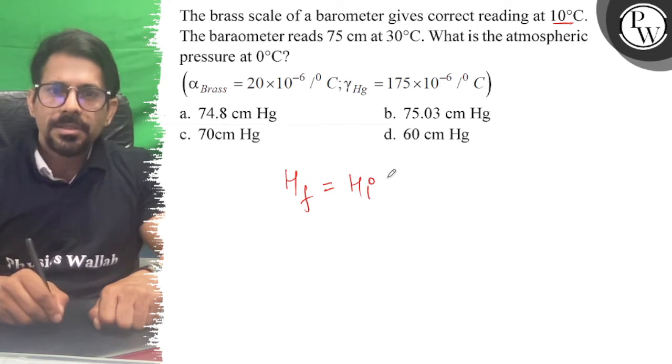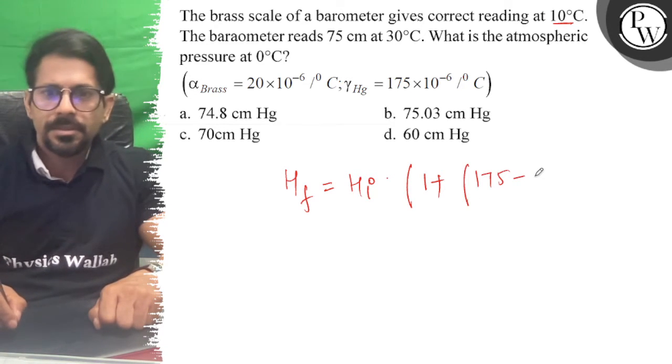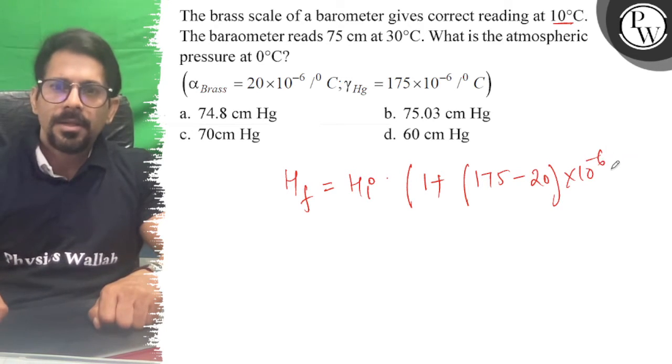H initial times [1 plus (175 minus 20) times 10 to the power minus 6 times delta T], that is equal to 20.